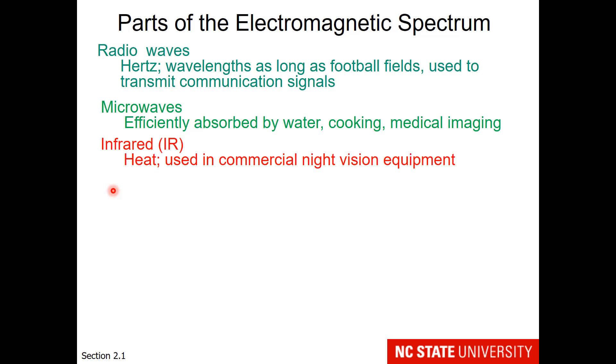Infrared waves are also called heat signatures, and these can be used in commercial night vision equipment and to keep food warm. Visible are the parts of the electromagnetic spectrum seen by human and most animal eyes. Ultraviolet waves are high in energy, these can break chemical bonds, which might explain sunburn to you.